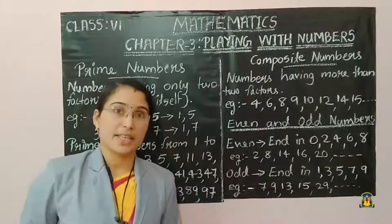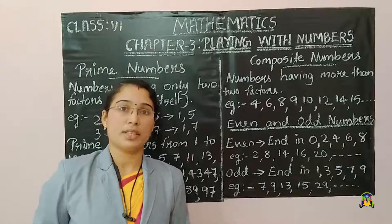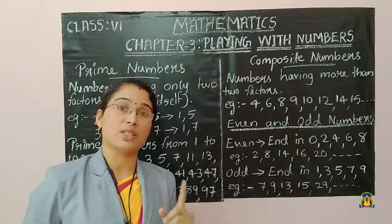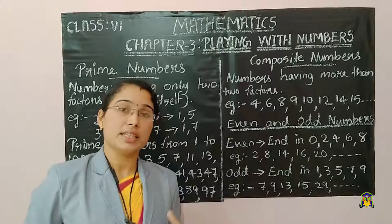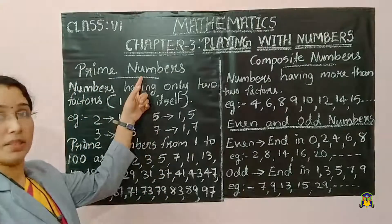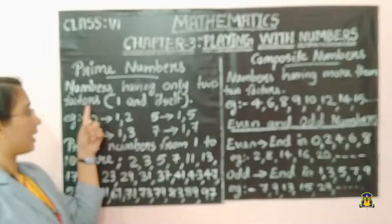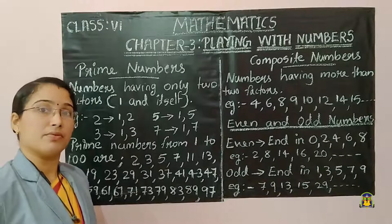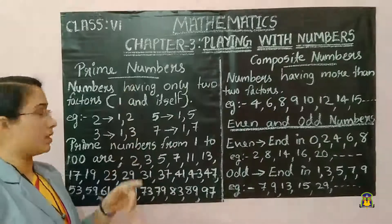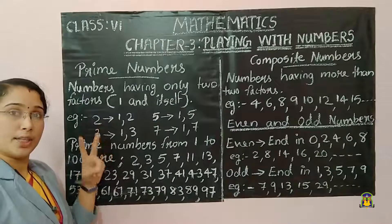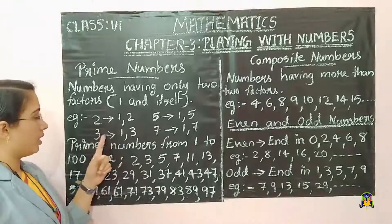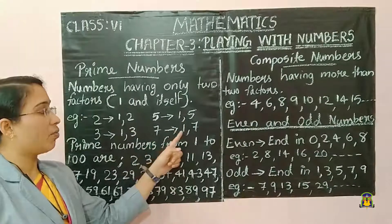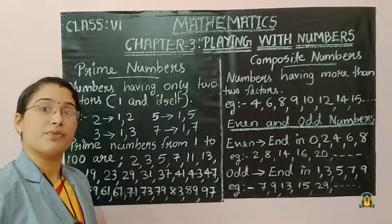Next we can study about prime numbers. Some numbers have only two factors: 1 and the same number itself. Those numbers are called prime numbers. Numbers having only two factors — 1 and itself — are called prime numbers. For example, number 2 has only two factors: 1 and 2. Then 3 has factors 1 and 3. Number 5 has 1 and 5. Number 7 has 1 and 7. These are all prime numbers.